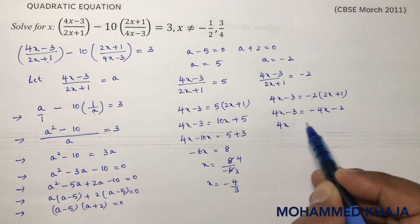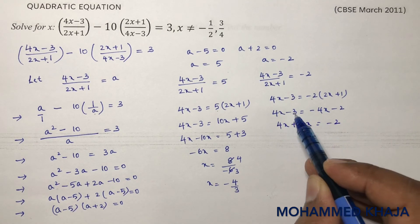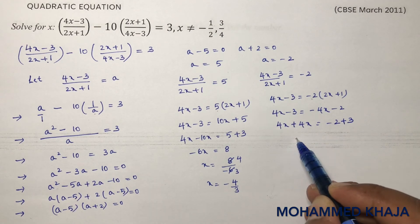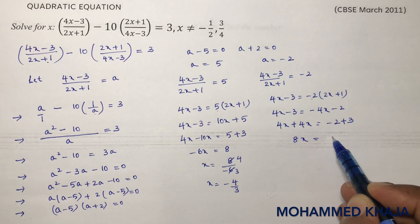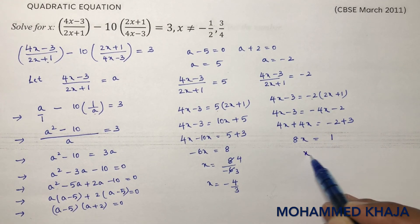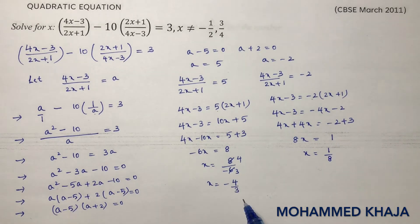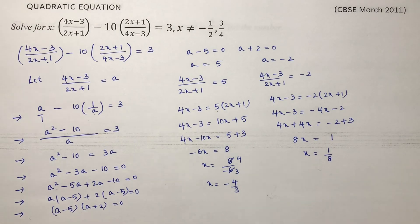Solving the second equation gives x equals 1 by 8. So the two values for x are minus 4 by 3 and 1 by 8.